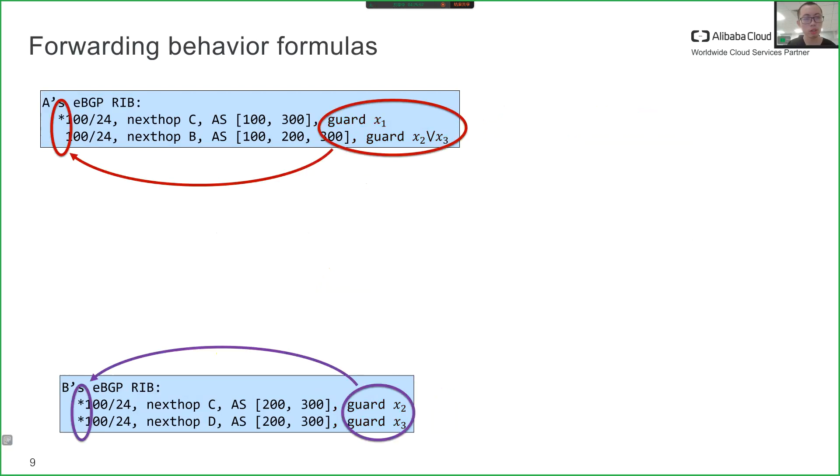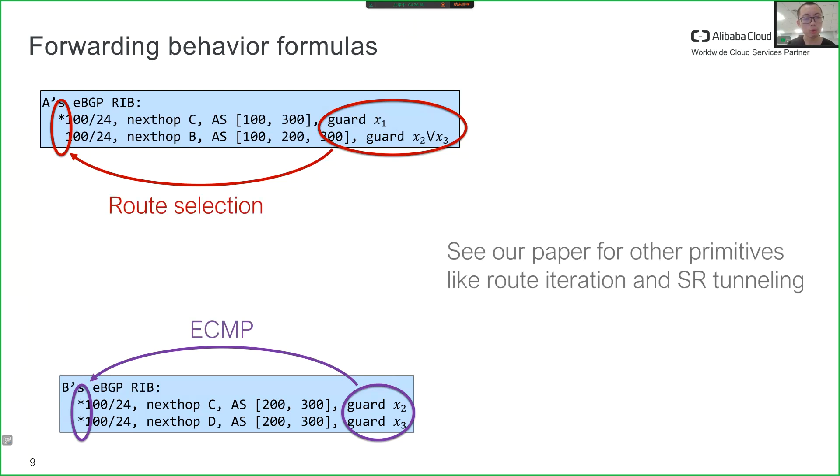Based on the guarded routing tables, the next step is to build formulas to describe the forwarding behavior of the router. Next, we discuss two primitives: route selection and ECMP. For other primitives, such as route redistribution and SR tunneling, please refer to our paper.